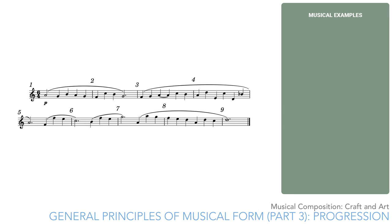Also, the successive peaks are not spaced entirely regularly. For example, measure 7 includes both the G and the high A. These details create enough uncertainty to maintain the listener's interest, since they're not 100% predictable.